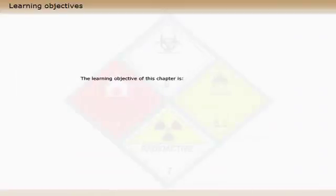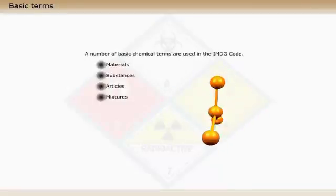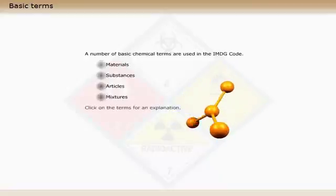The learning objective of this chapter is to examine some basic chemical terms found in the IMDG code. A number of basic chemical terms are used in the IMDG code. Click on the terms for an explanation.